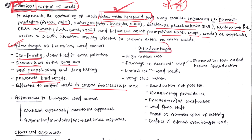The limitations or disadvantages of biological weed control: first, there is a high initial cost involved in finding, multiplying, and releasing the bio-agent such as an insect. This initial cost is very high in biological weed control.